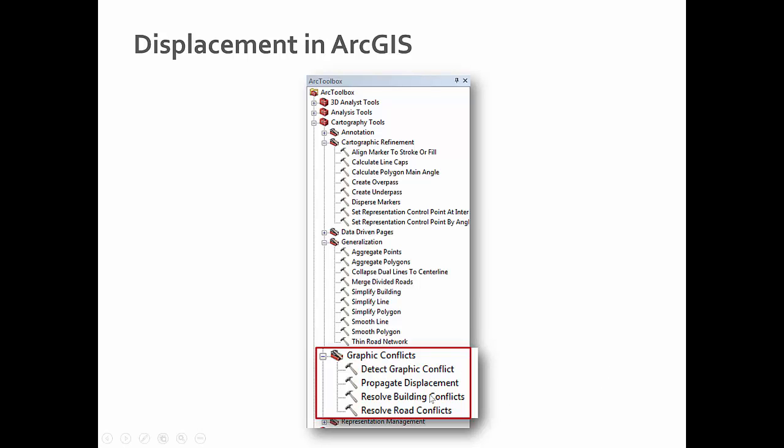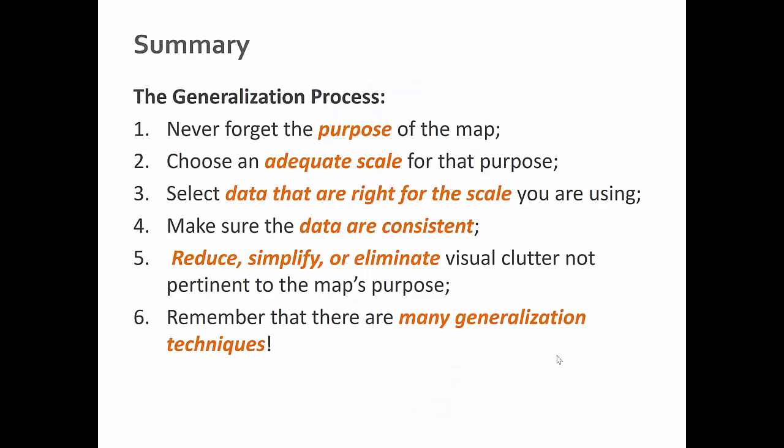Displacement is possible in ArcGIS as well — you can detect graphic conflicts and do a bunch of things with those tools. In sum, every piece of generalization should be done to enhance the purpose of your map. Always choose an adequate scale, select data that are right for the scale, make sure the data are consistent, and reduce or eliminate visual clutter that does not help your map's purpose. Remember that there are tons of different generalization techniques, and generalization is not only okay — it's crucial for effective communication. Good generalization is what separates professional cartography from amateur.